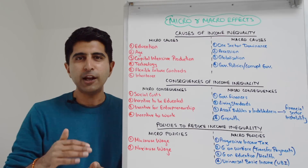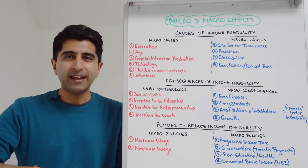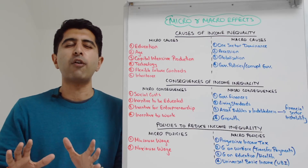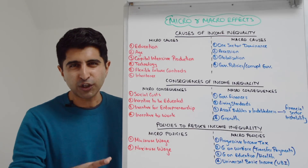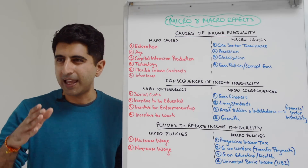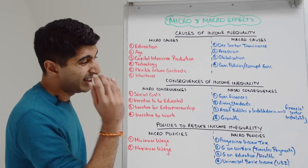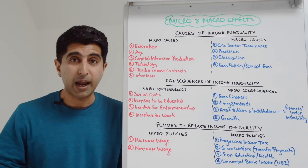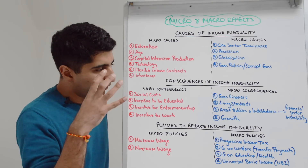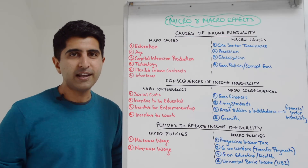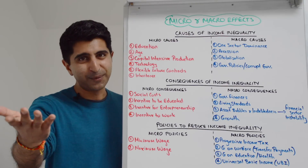So there you go — that's the major topic area of inequality covered under micro and macro effects. Make sure you're doing this for a wide variety of topic areas that could feature in Paper 3. My revision for Paper 3 playlist has loads of videos covering all those other topic areas for you. Get practicing like that and you're set for Paper 3. Thank you for watching, and look out for more releases coming soon.